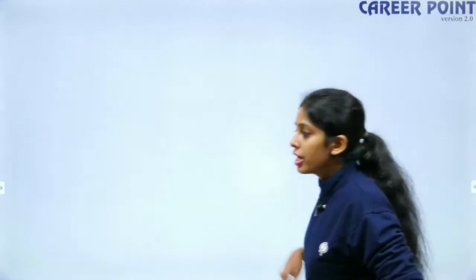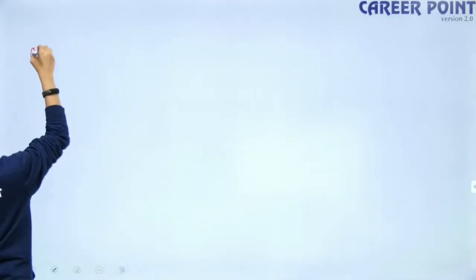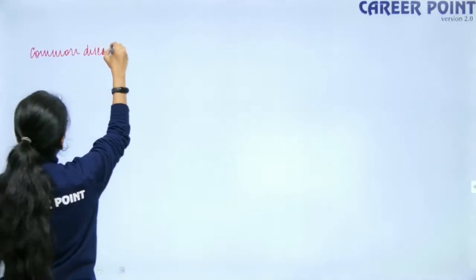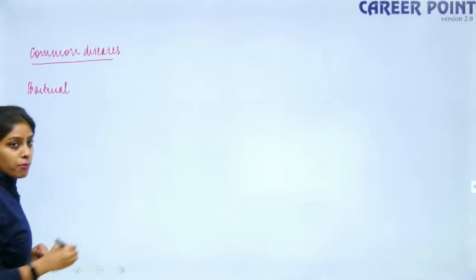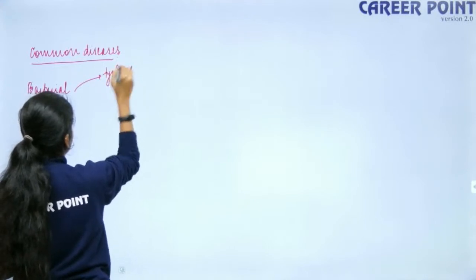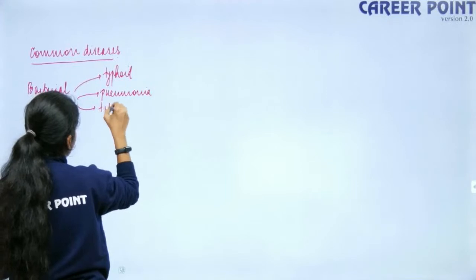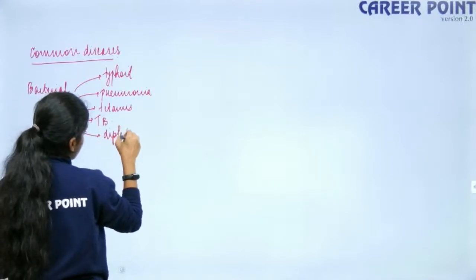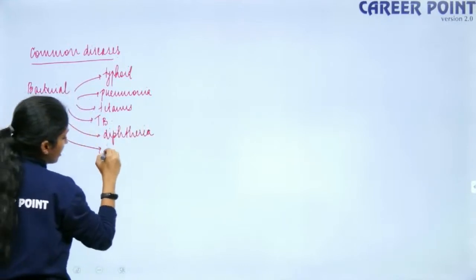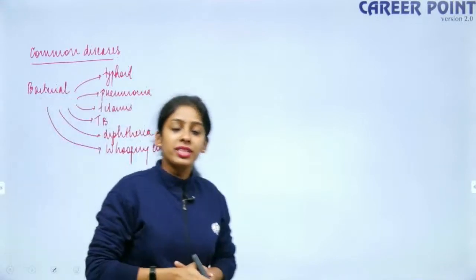Here's a flowchart of the common diseases before we move to immunity. Bacterial diseases include typhoid, pneumonia, tetanus, tuberculosis, diphtheria, and whooping cough — all are bacterial diseases.